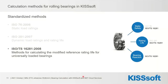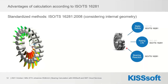Going back to the slides: those two standards are fundamental and important, but they only give us information on static safety and rating life. We therefore highly recommend using not only those two standards but also the ISO TS 16281 specification, because as you can see on the right-hand side, this standard allows you to assess all three objectives — static safety, rating life, and bearing reaction.